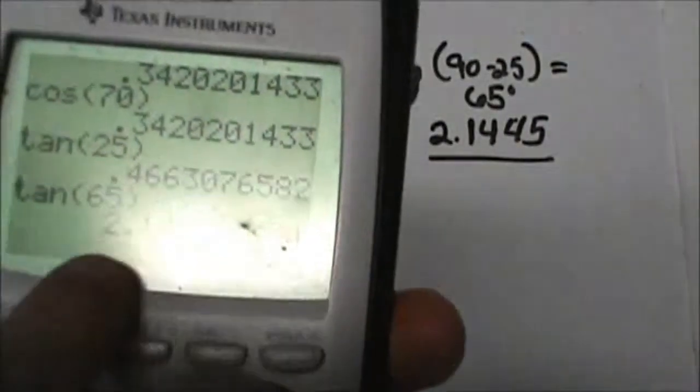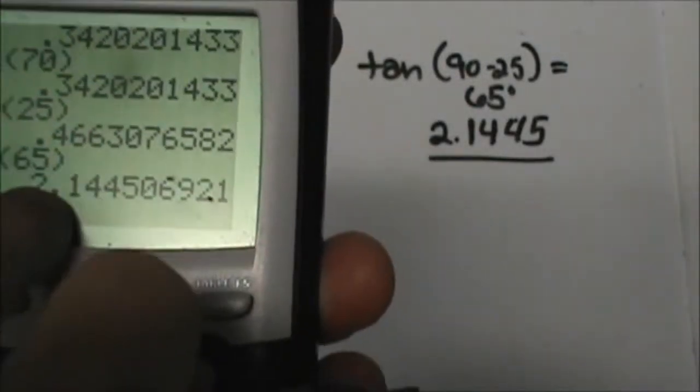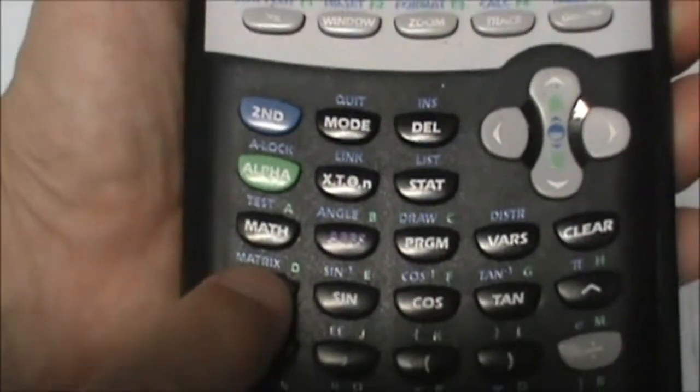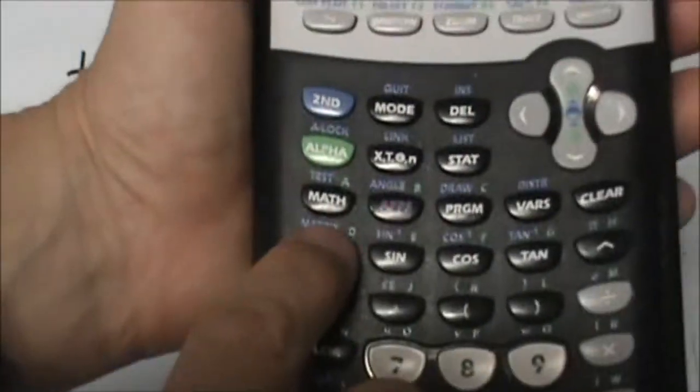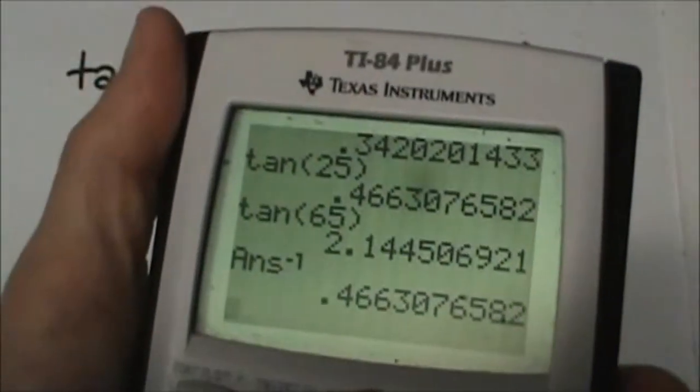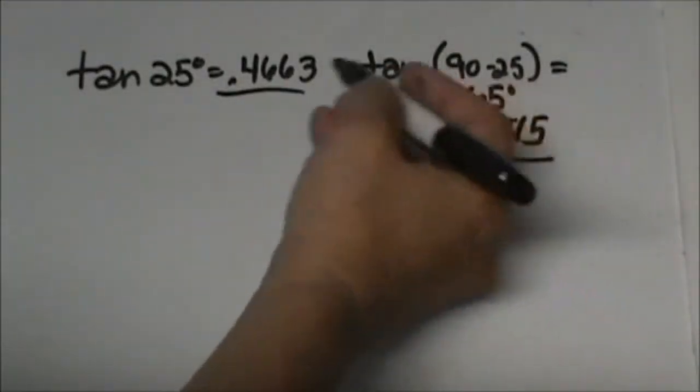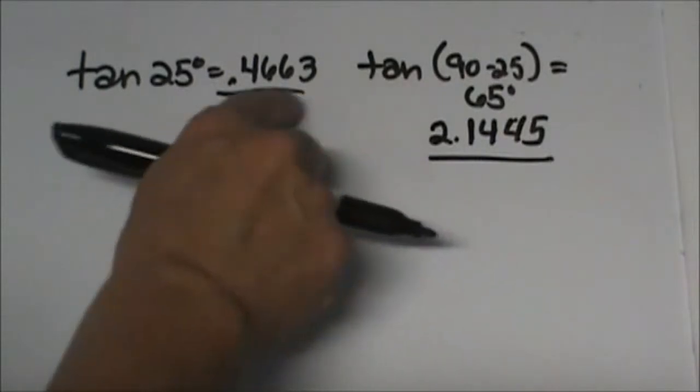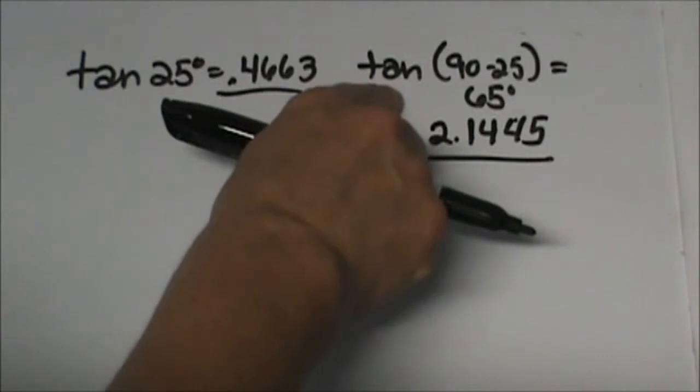If I take this ratio, because 25 and 65 adds to 90, if I take one of the ratios and I click this x to the negative one, that means it's inverse or flip it over. I'm going to take that and flip it over that last answer, and notice I am getting the first answer. So the inverse, these are just inverses of each other.